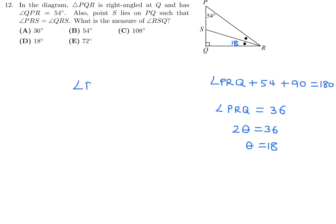So this is 18 right there. Now to figure out RSQ, that angle plus 18 plus 90 is 180. When you do that math, RSQ looks like it will be 72. Therefore, number 12, the answer is E.